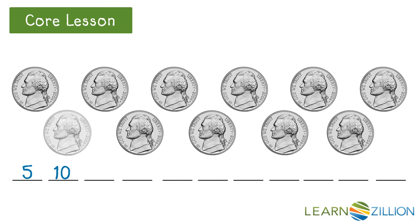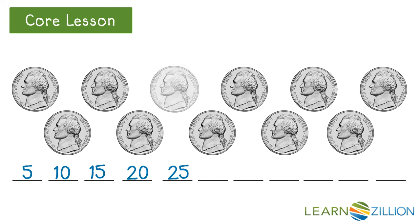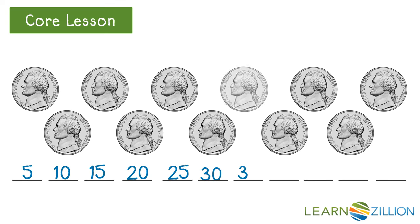Five, ten, fifteen, twenty, twenty-five, thirty, thirty-five, forty, forty-five, fifty. Look at the pattern. What number would come next? That's right — the number fifty-five is next. Eleven nickels is worth fifty-five cents.